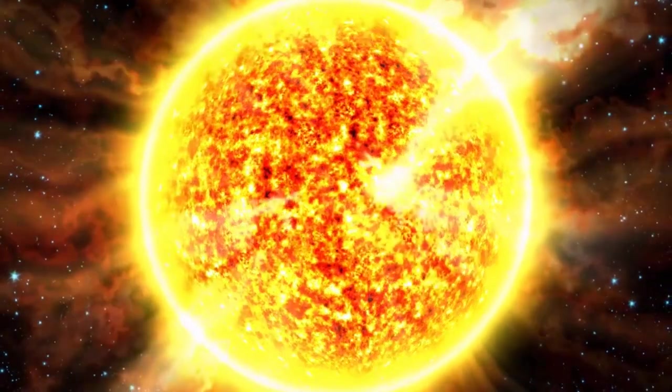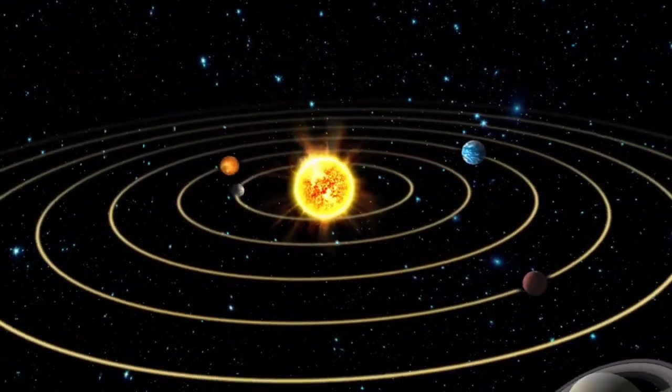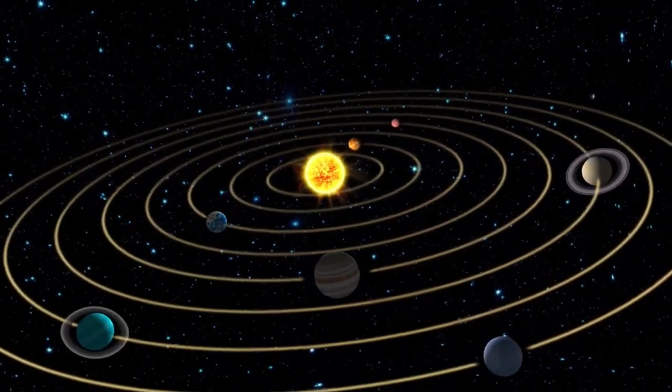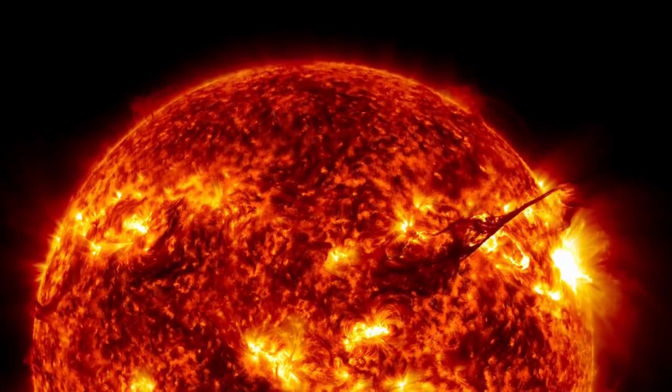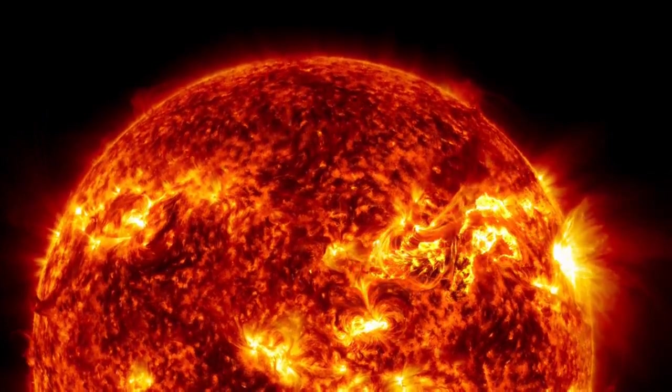The sun is the brightest object in our sky, the source of most of the energy on Earth, and the center of our solar system, with eight planets orbiting around it. The sun is classified as a yellow dwarf, and its surface temperature is a scorching 6,000 degrees Celsius.